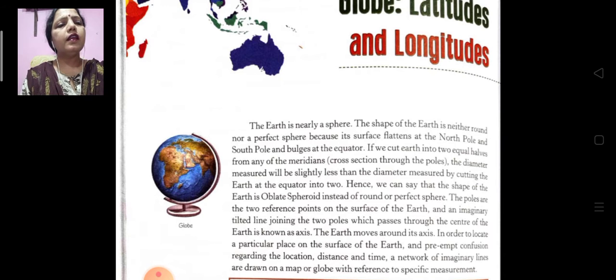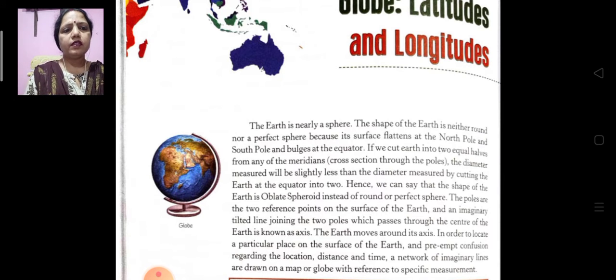The earth is nearly a sphere. The shape of the earth is neither round nor a perfect sphere because its surface is flatter at the north pole and the south pole is bulged at the equator.